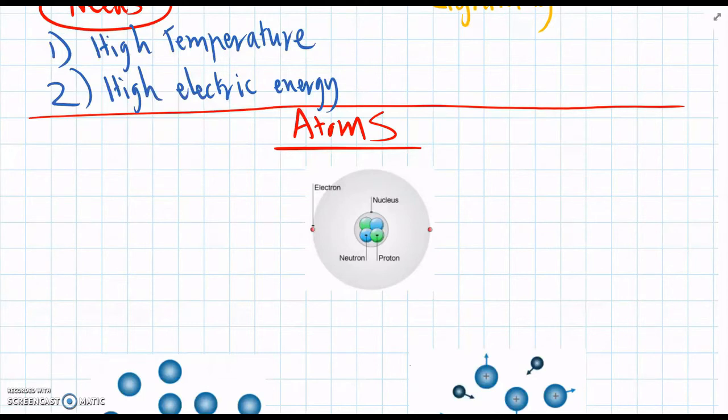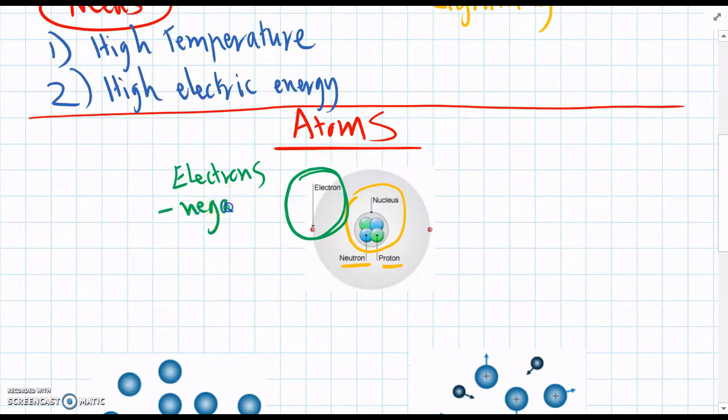And atoms are made up of three main features. We have the nucleus in the middle, which is made of protons and neutrons. And then around the outside, which is the important part, we have electrons flying around. And electrons, they have a negative charge. So we often draw electrons as a circle with a little negative symbol.